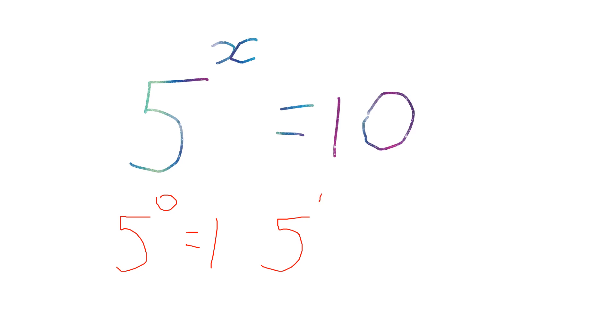5 to the power of 1, any number to the power 1 is just itself. And then 5 to the power of 2, or 5 squared, means 5 times 5, which is 25.